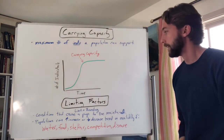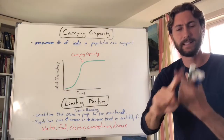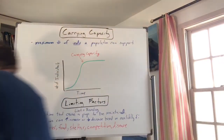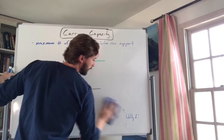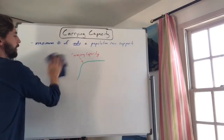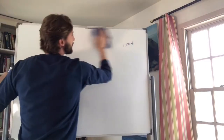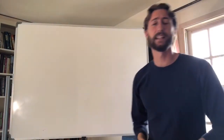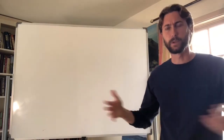Now let's talk about two types of limiting factors: density dependent and density independent. Remember, carrying capacity is the maximum number of individuals a population can support, and that limit is set by limiting factors. Before we discuss them, let's clarify what density means.